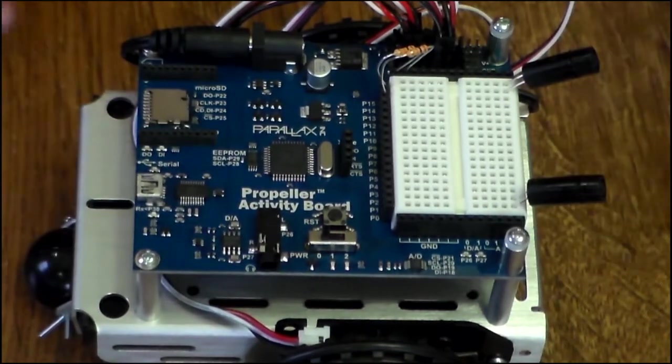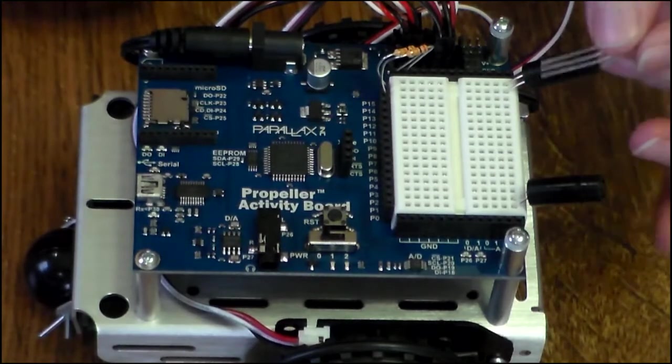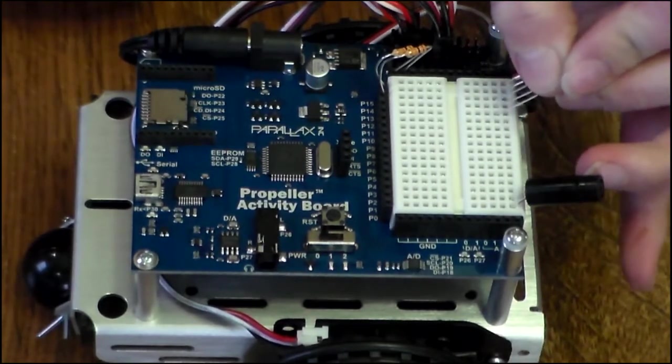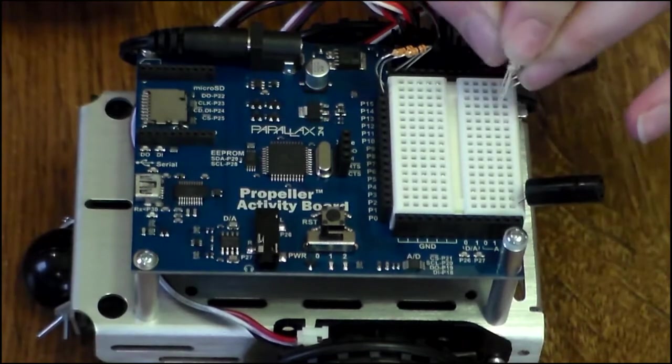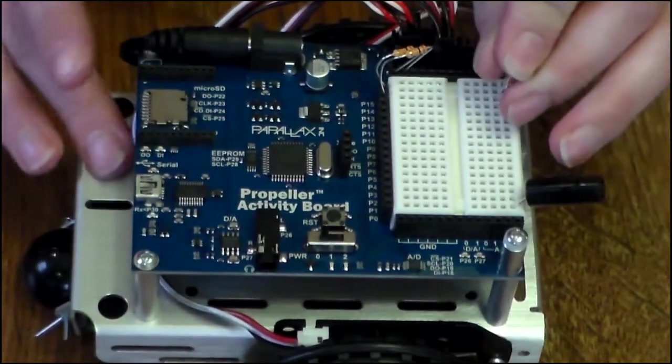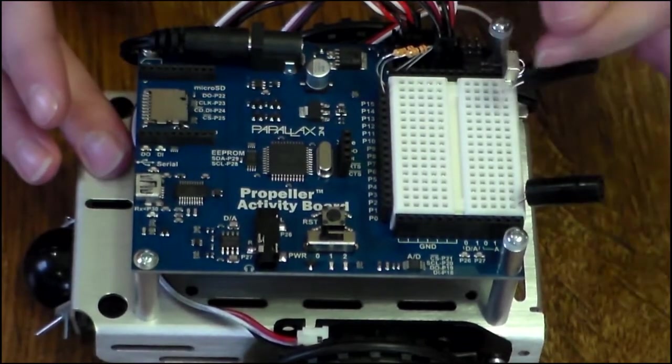And then we'll put the receivers in. They start in the row right next to the LEDs and one back. So starting in the third row, one back. Make sure that the receiver light is facing forward, or the receiver is facing forward.